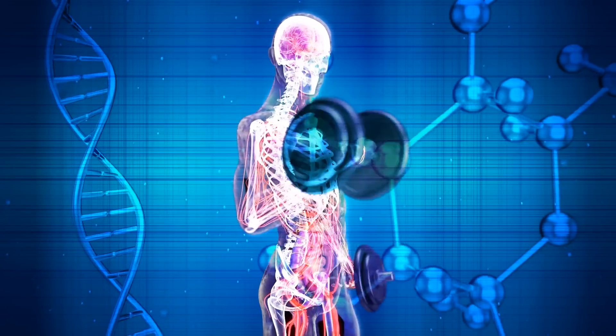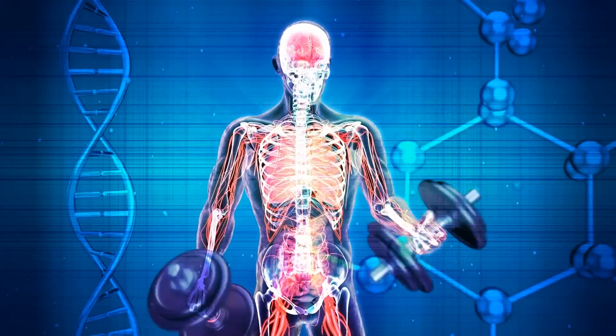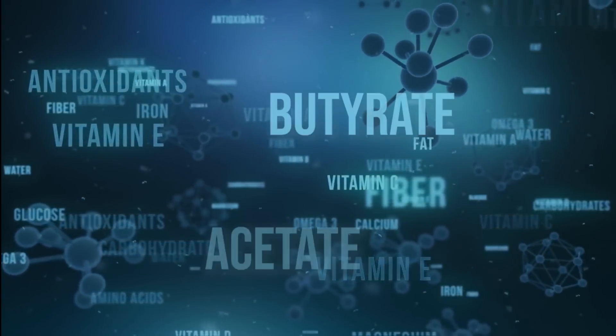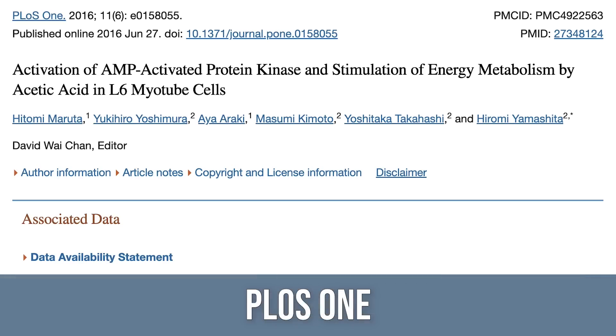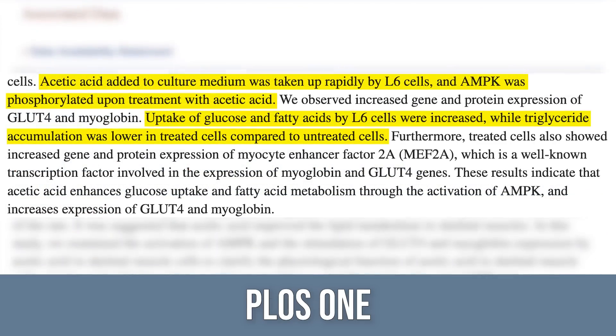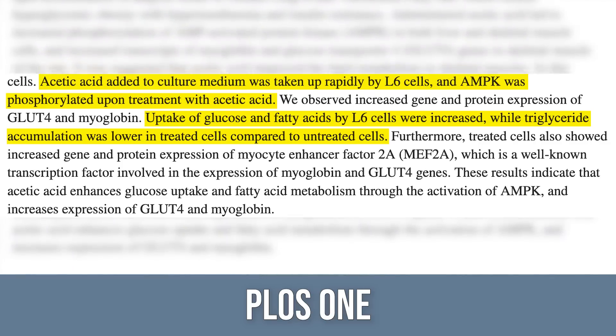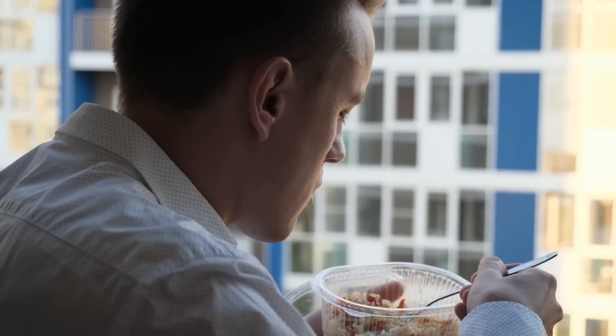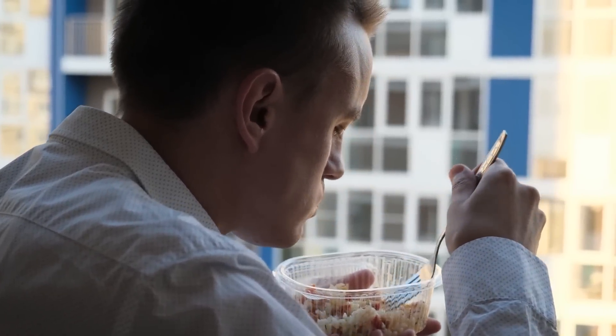We look at a study published in PLOS 1 — an in vitro, petri dish study. They took human muscle cells and treated them with acetic acid, or acetate, which is a short chain fatty acid — along with propionate and butyrate, all important short chain fatty acids produced by bacteria. When they treated these muscle cells with acetate, it increased AMPK, increased the uptake of glucose and fat into the cell, and decreased the level of triglycerides. This could be the direct effect of short chain fatty acids from eating fiber influencing fat loss.